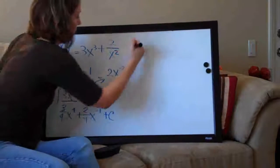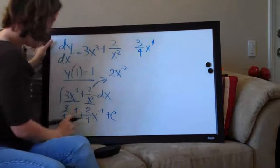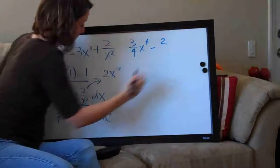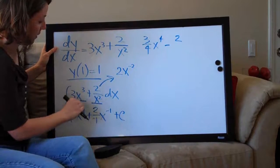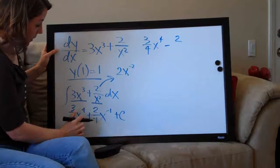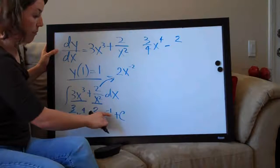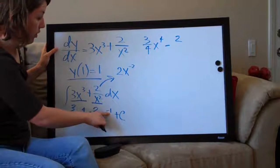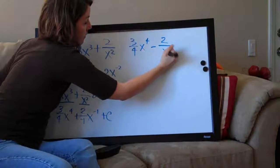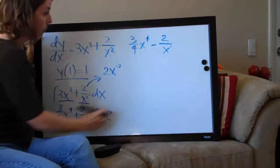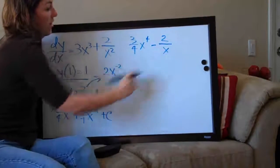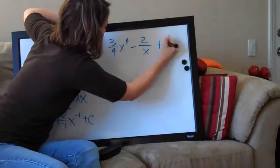Let's simplify before applying the initial condition. We keep 3 fourths x to the fourth. For the second term, 2 over negative 1 is negative 2, so we write minus 2. Then x to the negative 1 can be moved to the denominator by flipping the sign on the exponent to positive, giving 1 over x. So the simplified equation is y equals 3 fourths x to the fourth minus 2 over x plus C.